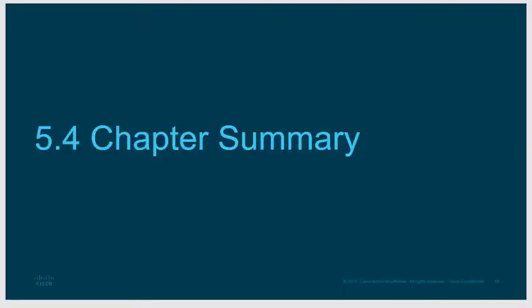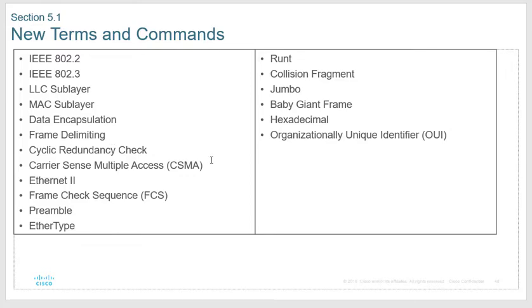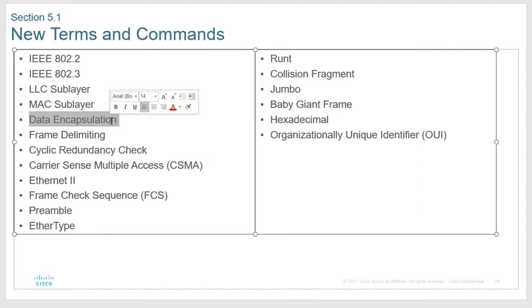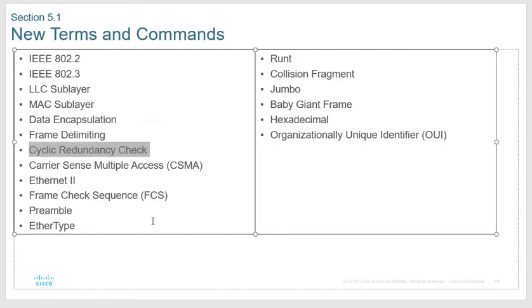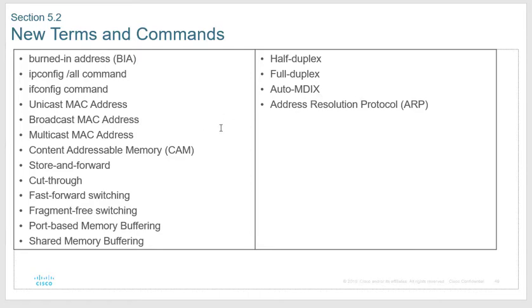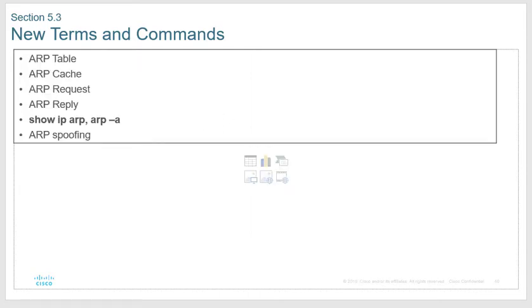To wrap up: make sure you know all the key terms. Jumbo and baby giant are frames over 1518 bytes. A runt is smaller than 64 bytes. Hexadecimal — know where the OUI is (first six digits of the MAC address). Encapsulation is putting information on the packet. Frame delimiting means watching the size. The CRC or frame check sequence checks whether the packet has been corrupted. The preamble signals the start. Ethertype tells you what type of Ethernet you're on. 802.2 is LLC, 802.3 is Ethernet in general.